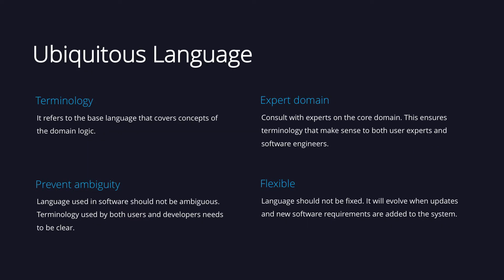The first concept to review is the ubiquitous language. The term might sound complex but the idea behind it is quite simple. We need to establish a set of words that are going to cover the core concepts of a domain. This is going to be the language used to create our software and also for internal communication with our users.